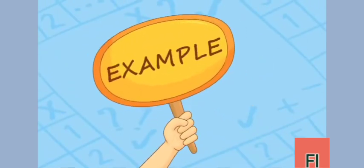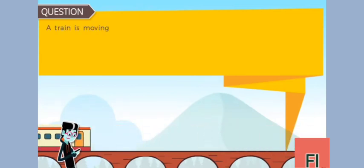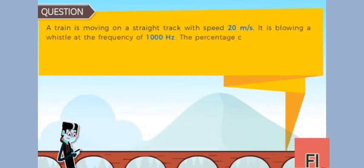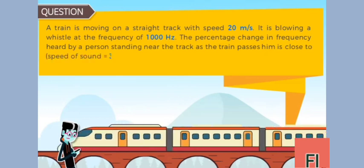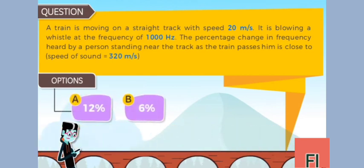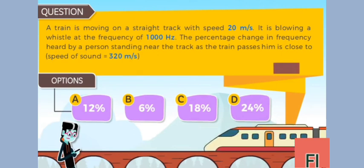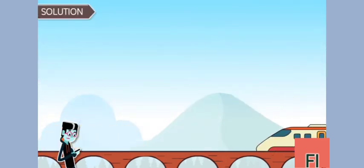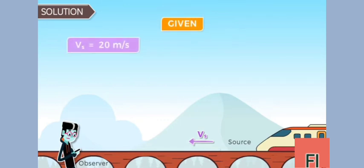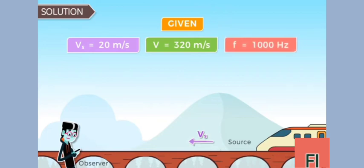Let's solve an example to understand this concept better. A train is moving on a straight track with speed 20 meters per second. It is blowing a whistle at a frequency of 1000 Hz. The percentage change in frequency heard by a person standing near the track as the train passes him is close to — speed of sound is 320 meters per second. The options are 12%, 6%, 18%, 24%. This question was asked in the JEE Mains 2015 exam. From the question, we can clearly identify that this is the case of a moving source (the train) and a stationary observer (the man). We are given: speed of train vₛ = 20 m/s, speed of sound v = 320 m/s, and frequency of whistle f = 1000 Hz.